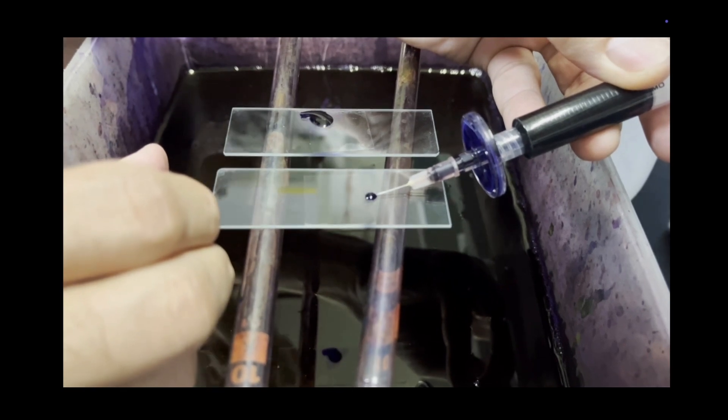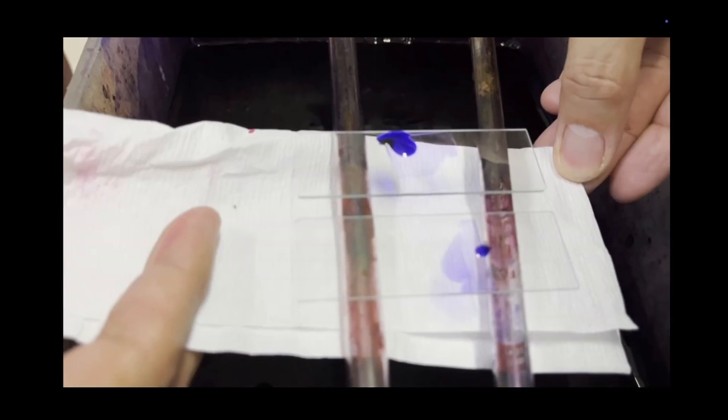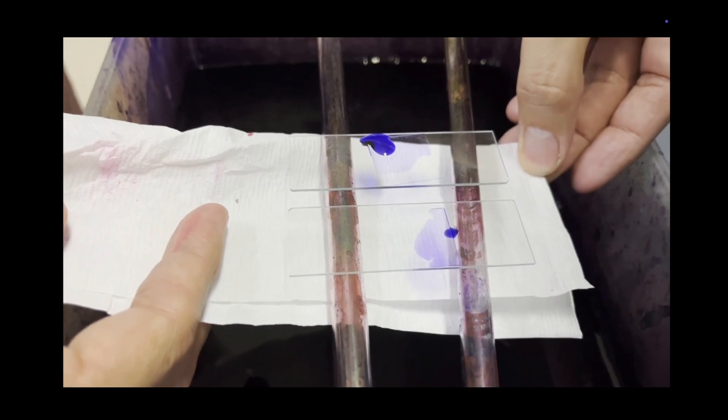Slowly at the edge of the cover slip you can see the stain slowly spreading through the cover slip.